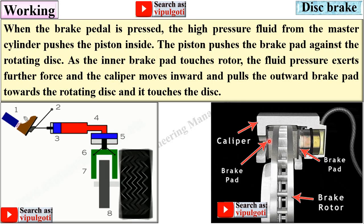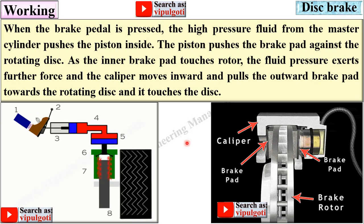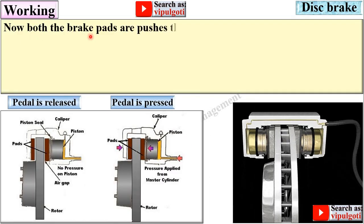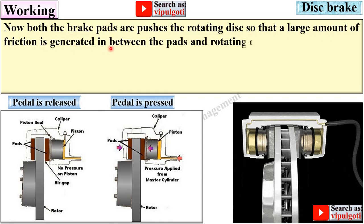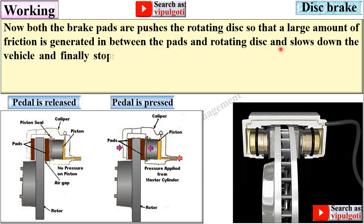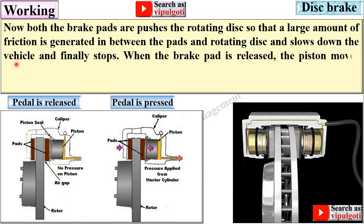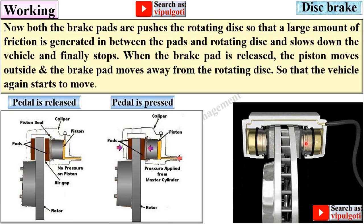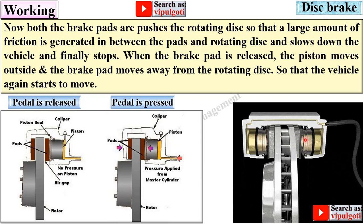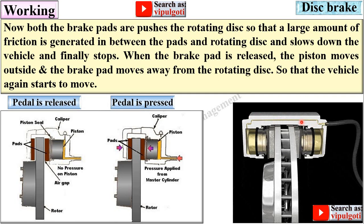Both brake pads press against the rotating disc so that a large amount of friction is generated between the pads and the disc, slowing down and finally stopping the vehicle. In this figure, two pistons are used and the caliper is fixed, whereas in the previous figure the caliper is floating.